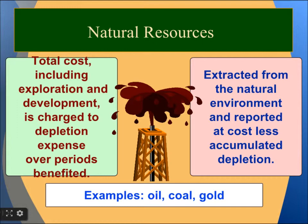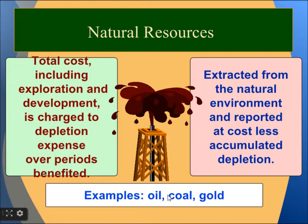Natural Resources include total cost covering exploration and development. They are extracted from the natural environment and reported at cost less accumulated depletion. A charge to depletion expense is made over the periods benefited. Examples include oil, coal, and gold.